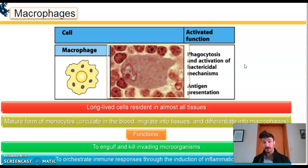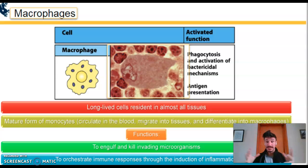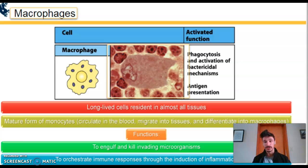Macrophages are the other critically important phagocyte in the innate immune response. They function similarly to dendritic cells — taking in the invading microbe, breaking it down in the phagosome, and presenting protein antigens on their surface. Macrophages are found in almost all of the body's tissues — muscle, bone, skin, and mucosal tissue — where they take up long-term residence.